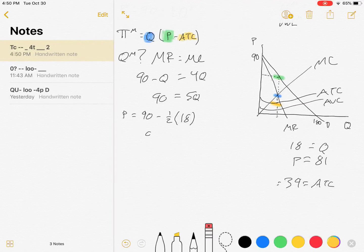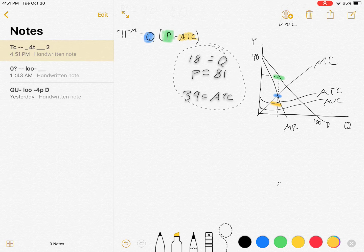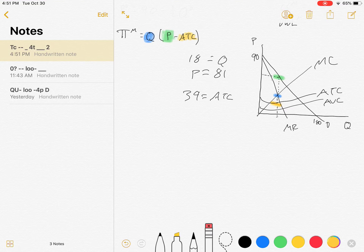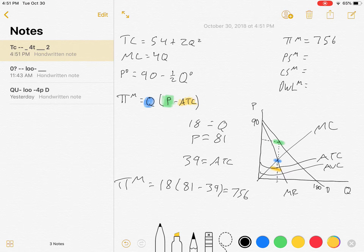With our quantity solved for, our price solved for, and our average total cost solved for, we are ready to calculate the monopolist profit. We'll just substitute all three of these things into our profit function. Profit equals 18 times (81 - 39), which comes out to be 756. There we got it, monopoly profit.